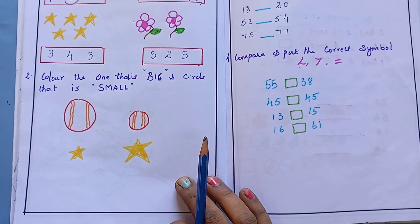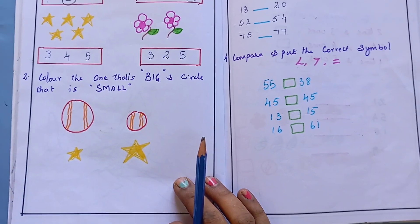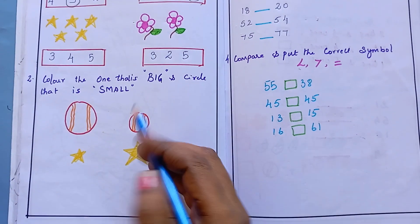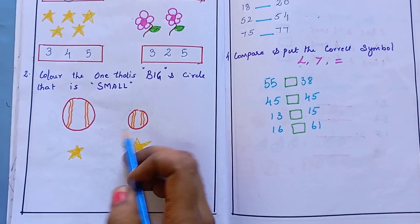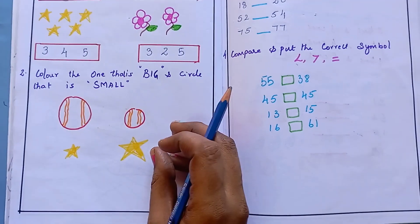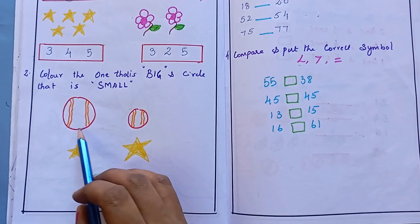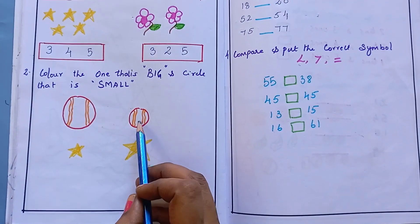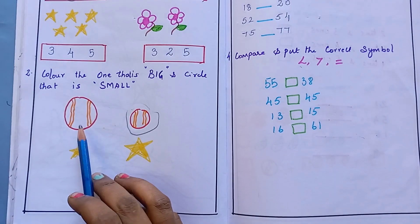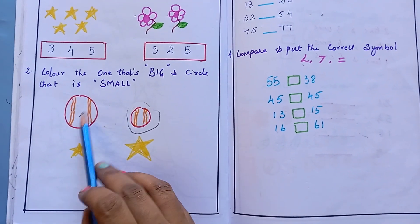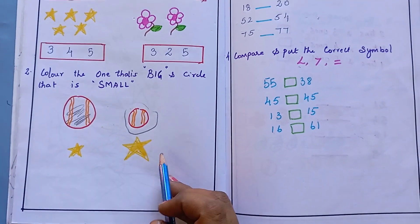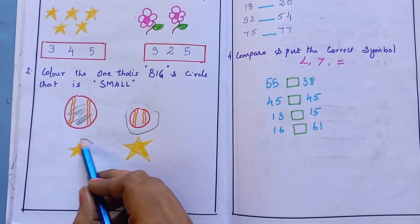The second question is: colour the object which is big and circle the object which is small. So for bigger objects, kids colour them, and for smaller objects, they circle them. Comparing these two, this is small, so they have to circle it, and the big one they have to colour it. Like this, they have to do this also.